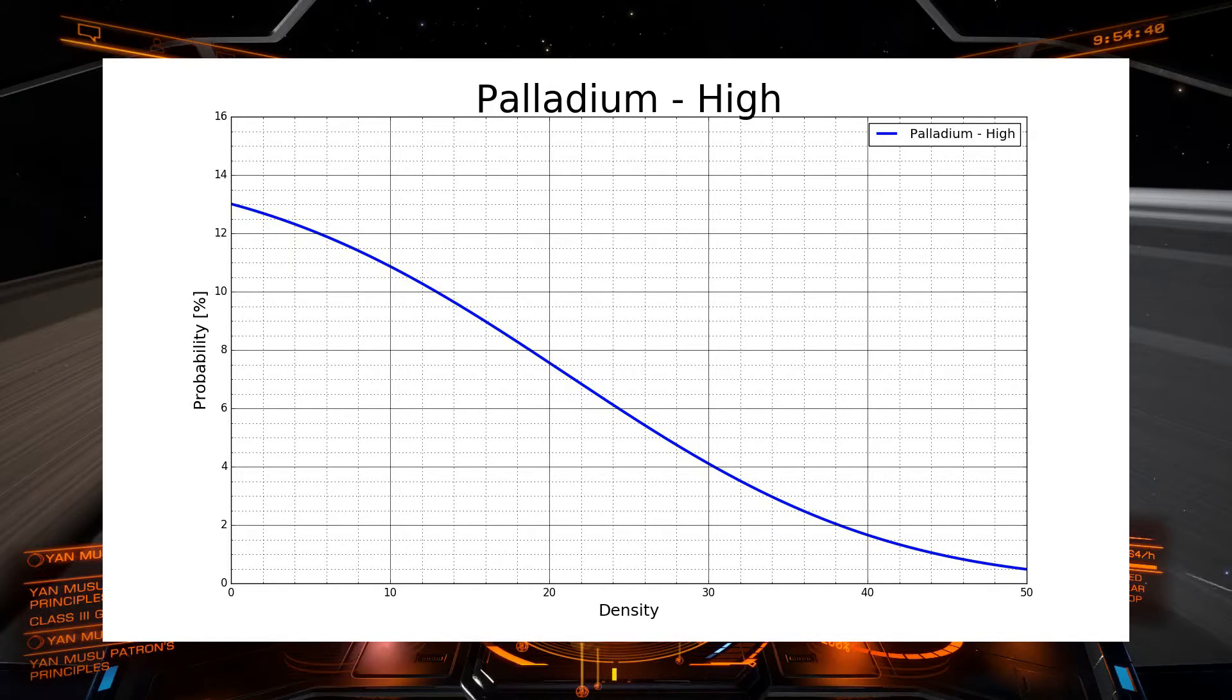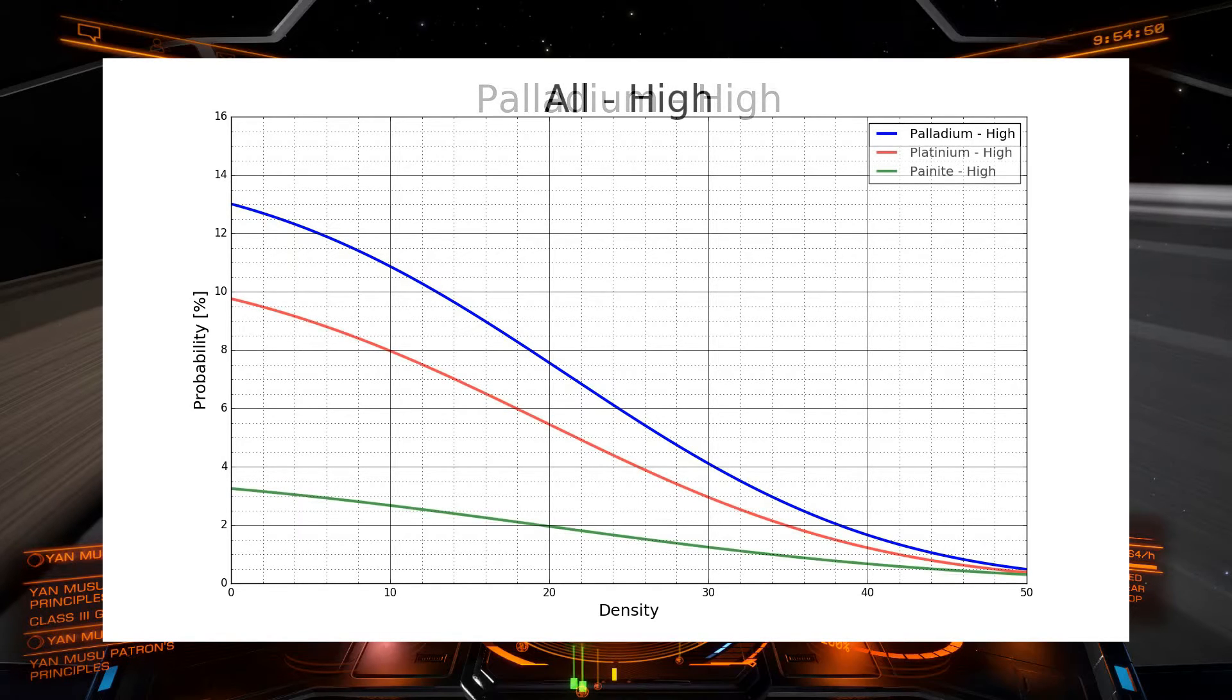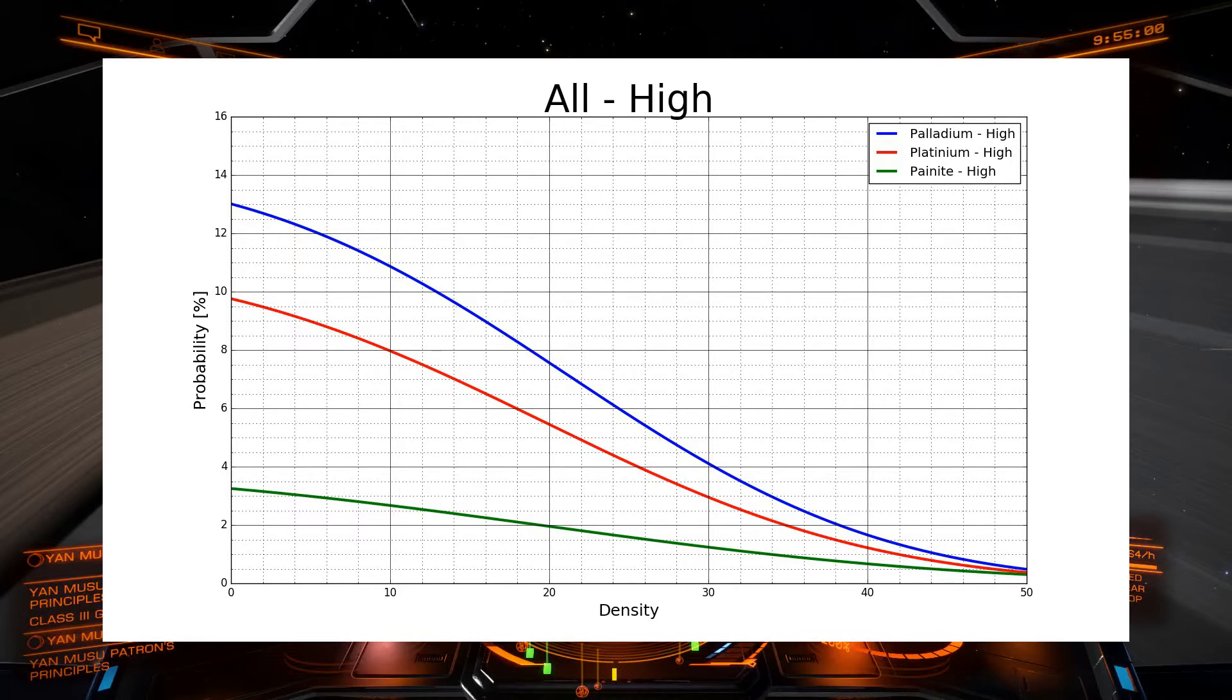And I did this for these three most valuable materials. And the graph for all the materials in high density areas is shown here. Now, the probability here, as you can see, is lower for each material. So as you would expect, palladium is more common than platinum, and painite is the most uncommon or the most rare material. And actually, I only found just above 3% of the rocks contained platinum.